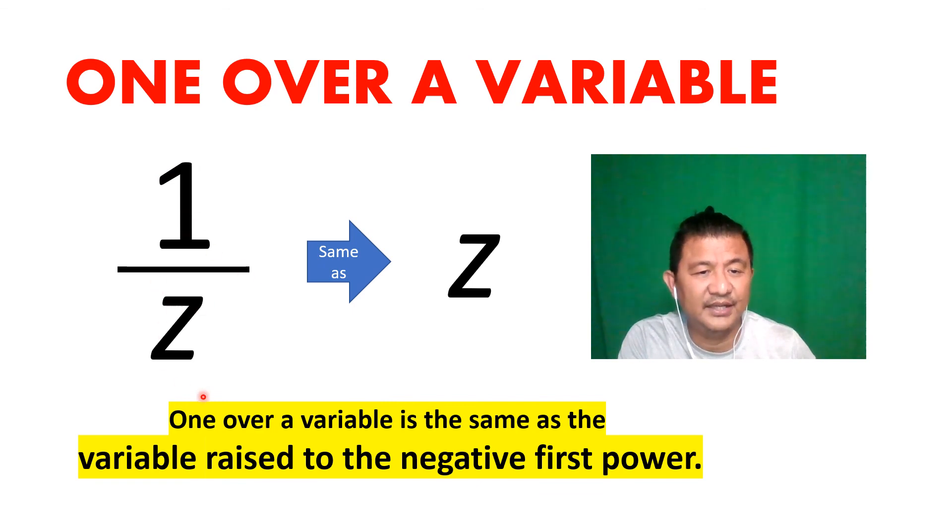One over a variable: one over any variable, that actually means z will have a special exponent. What would that be? A negative one. That one numerator is actually an exponent of negative one.